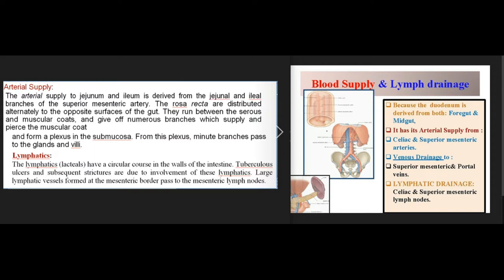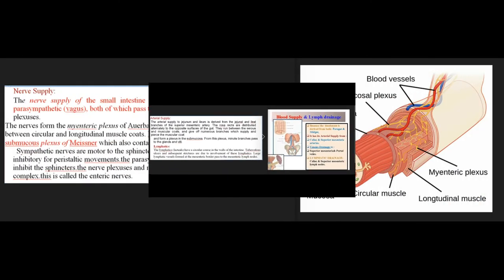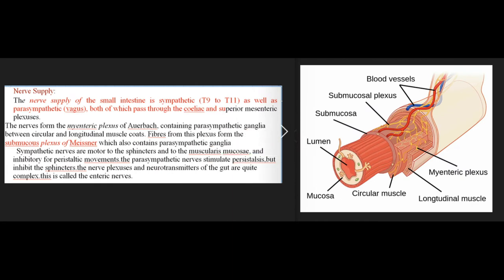Large lymphatic vessels formed at the mesenteric border pass to the mesenteric lymph nodes. The nerve supply of the small intestine is sympathetic T9 to T11, as well as parasympathetic vagus, both passing through the coeliac and superior mesenteric plexuses. The nerves form the myenteric plexus of Auerbach, containing parasympathetic ganglia between circular and longitudinal muscle coats. Fibers form the submucous plexus of Meissner, also containing parasympathetic ganglia. Sympathetic nerves are motor to sphincters and inhibitory for peristalsis; parasympathetic nerves stimulate peristalsis but inhibit the sphincters. This enteric nervous system is quite complex.